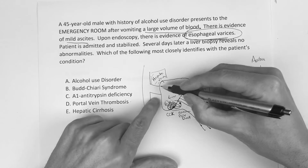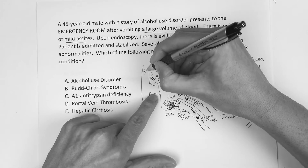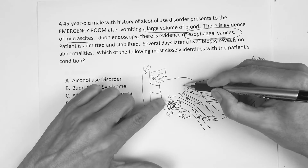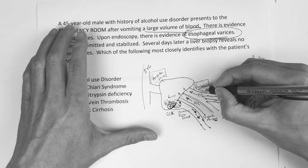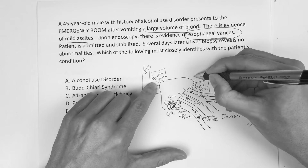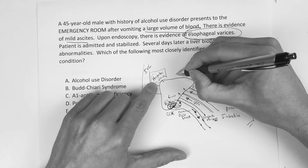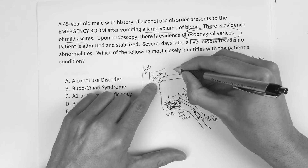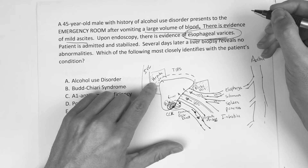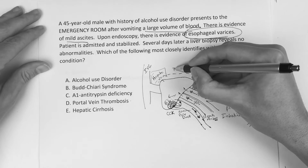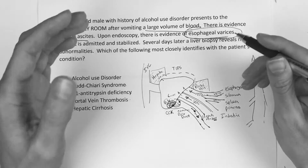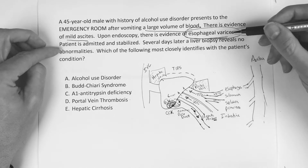As the liver drains through the hepatic vein, you've got the inferior vena cava. The last thing I want to mention is: when someone has a shot liver, there's a procedure that connects the portal vein to the hepatic vein to bypass the liver — that's called the TIPS procedure. That connects the portal vein to the hepatic vein. So that's the basics of the anatomy you've got to know for a question like this.